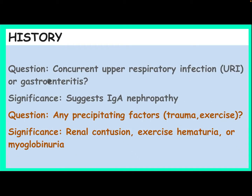Ask about concurrent upper respiratory tract infection or gastroenteritis, which is significant as it suggests IgA nephropathy. Ask about any precipitating factors such as trauma or exercise, which may indicate renal contusion, exercise hematuria, or myoglobinuria.